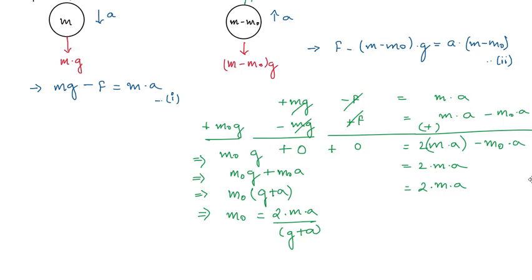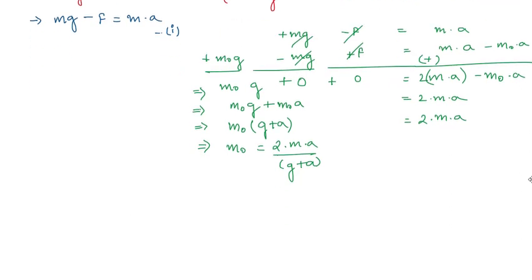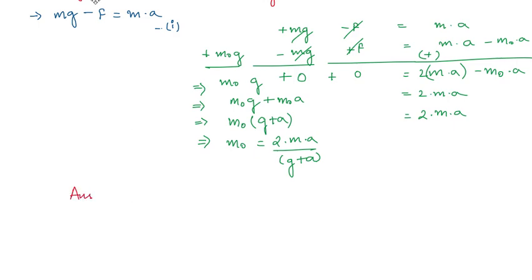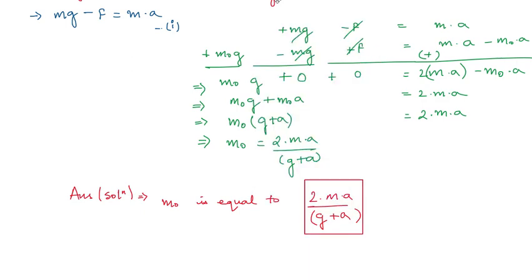In the expression for m₀ there is no other variable or constant that we introduced — m was given, a was given, g is a constant, and 2 is a constant. So the answer to this question is: m₀ is equal to 2ma over (g plus a). Let me put that in a box — this is our expression for m₀.